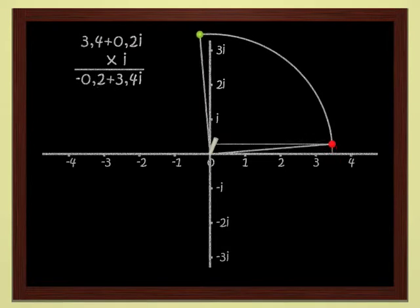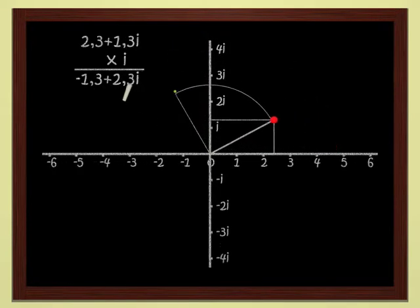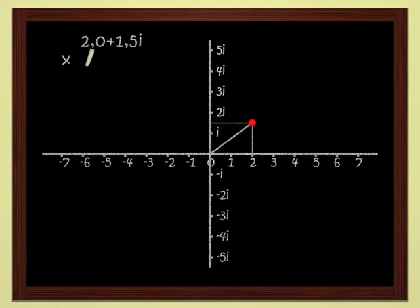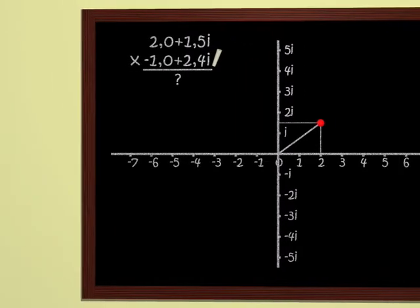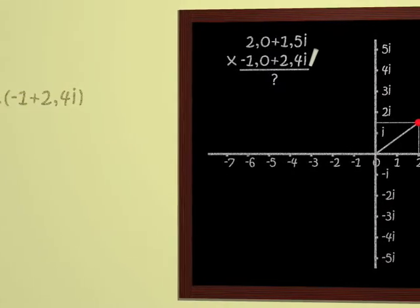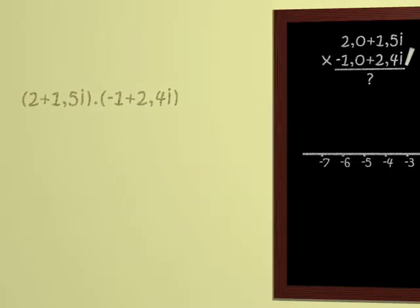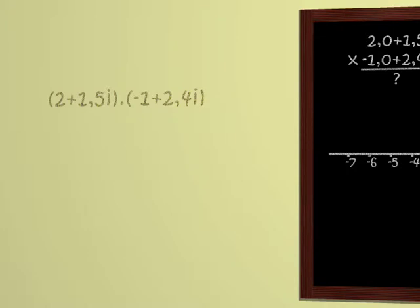And finally, we can multiply any two complex numbers with no problem whatsoever. For instance, let's try to multiply 2 plus 1.5i and 1 plus 2.4i. We proceed as usual. We first multiply by 2 and then by 1.5i and we add the results. Therefore, we get...